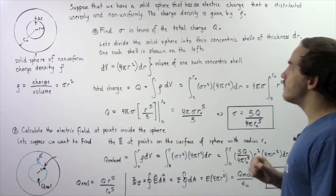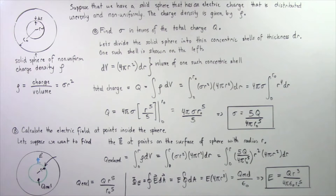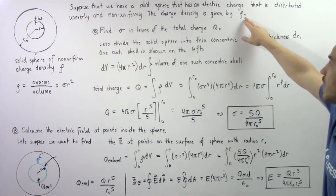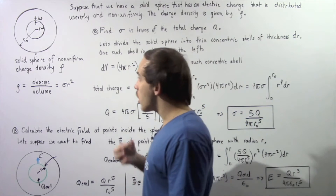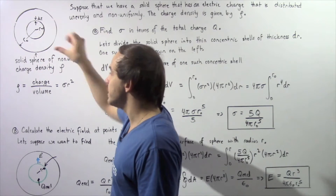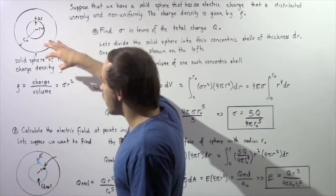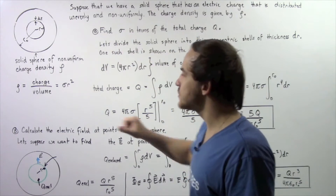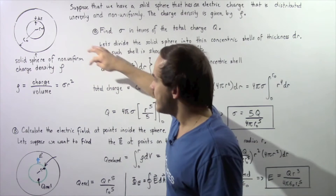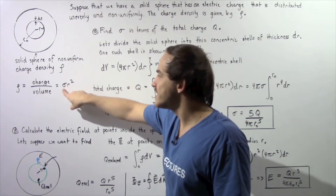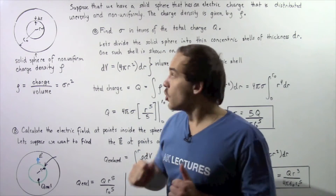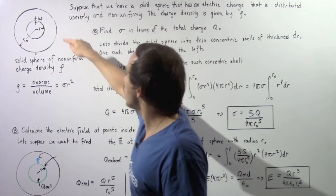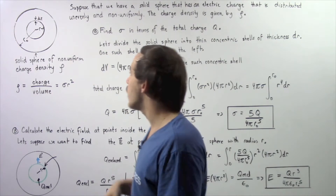Suppose we have a solid sphere with charge distributed unevenly and non-uniformly. The charge density is given by the Greek symbol rho. By definition, the charge density rho for a solid three-dimensional sphere is charge divided by volume. For this case, the charge density equals sigma multiplied by r squared, where sigma is a constant. So as the radius increases, charge density increases — it's largest at the outermost edge.